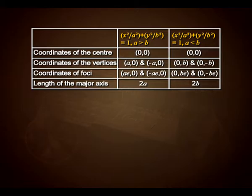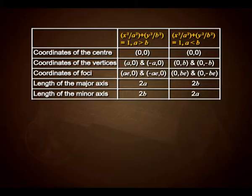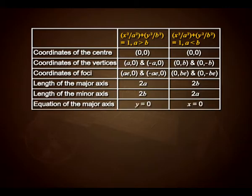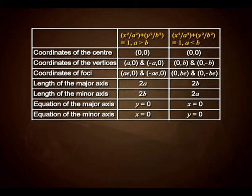The length of the major axis is 2a when a is greater than b, and 2b when a is less than b. The length of the minor axis is 2b when a is greater than b, and 2a when a is less than b. The equation of the major axis is y equals 0 when a is greater than b, and x equals 0 when a is less than b. The equation of the minor axis is x equals 0 when a is greater than b, and y equals 0 when a is less than b.